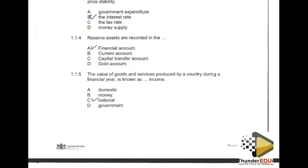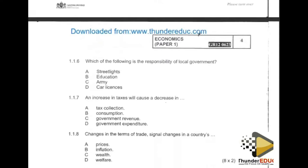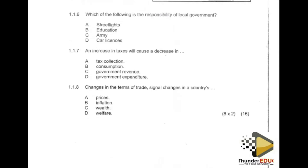Remember, the options given are often similar or close to one another, so you must always be careful when attempting them. Moving on to question 1.1.6: which of the following is the responsibility of the local government? A government refers to bodies that provide the economy with public goods — and public goods in most cases are free goods, unlike economic goods which have a price.